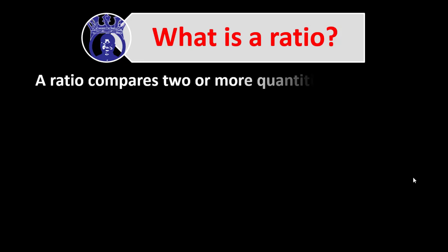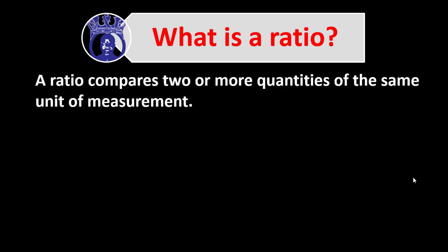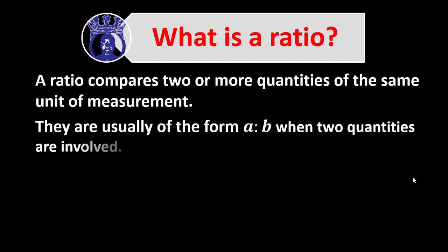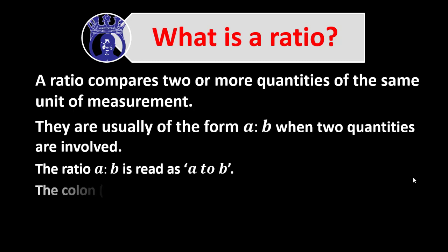A ratio compares two or more quantities of the same unit of measurement. Ratios are usually of the form A colon B when two quantities are involved. The ratio A colon B is read as 'A to B.' The colon is simply read as 'to.'